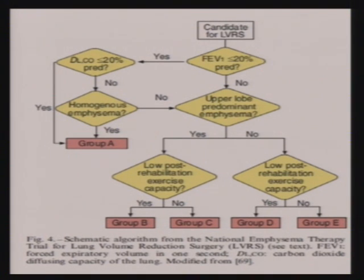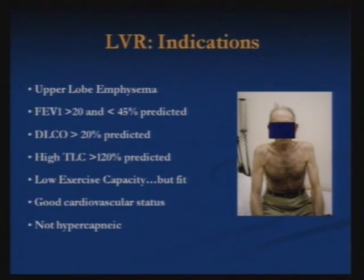If patients have predominantly upper lobe emphysema with good post-rehabilitation exercise capacity, they fit into Group B and are good candidates for LVRS. Patients with poor post-rehabilitation exercise capacity fall into Group C. Groups B, C, and D are where LVRS might be useful. Indications for LVRS are: predominantly upper lobe emphysema, FEV1 between 20 to 45 percent predicted, DLCO more than 20 percent, high TLC more than 120 percent, low exercise capacity, good cardiovascular status, and no hypercapnia.